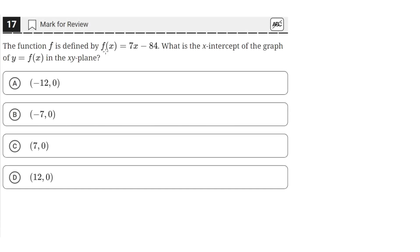Function f is defined by f of x equals 7x minus 84. What is the x-intercept of the graph of y equals f of x in the xy-plane?